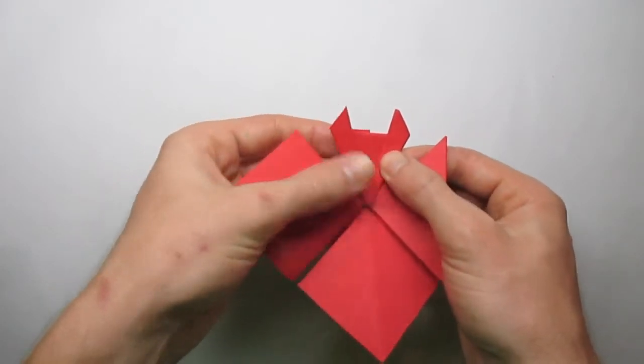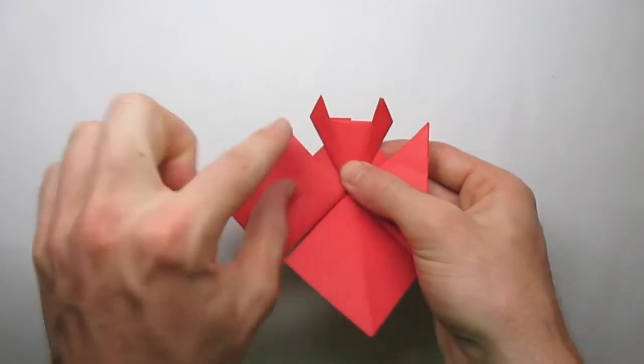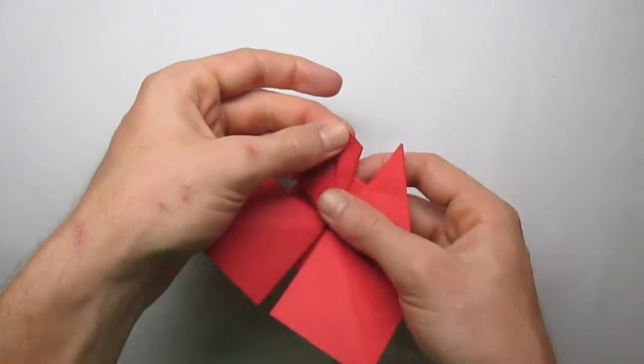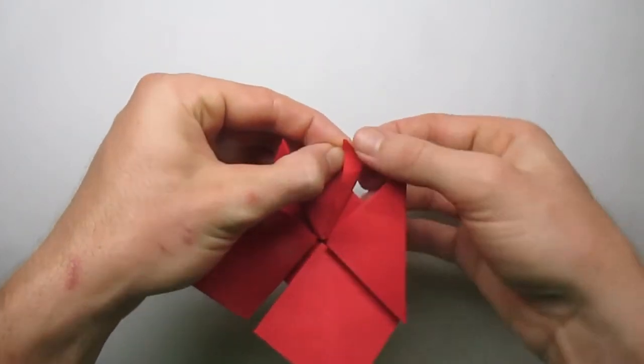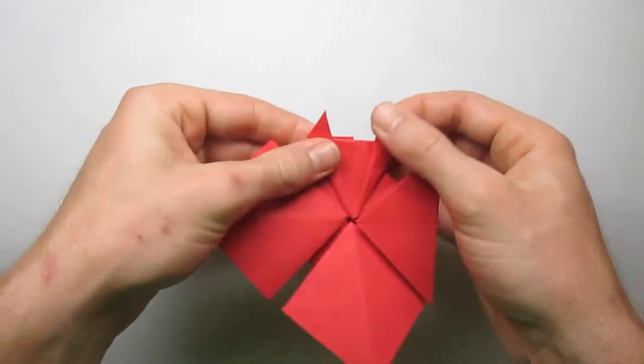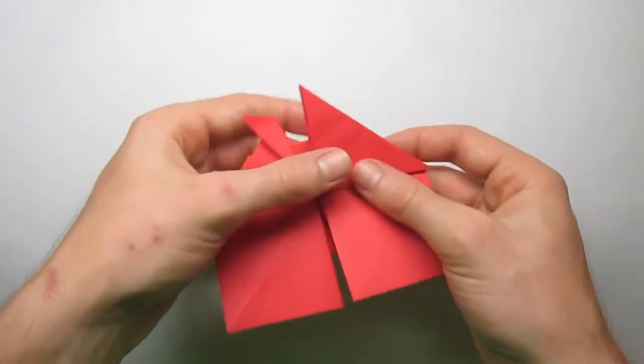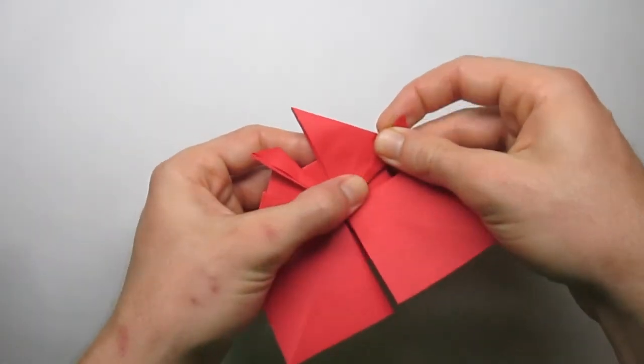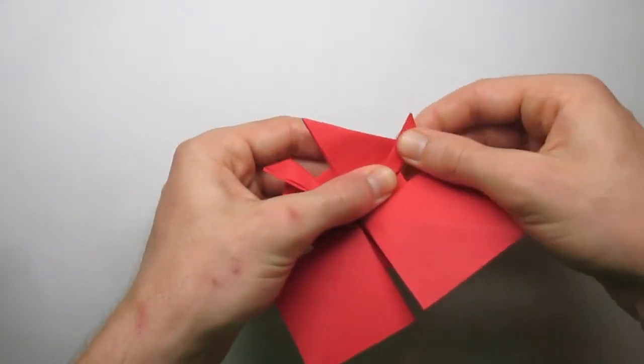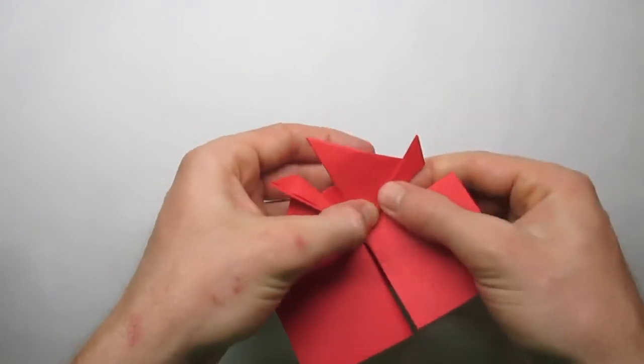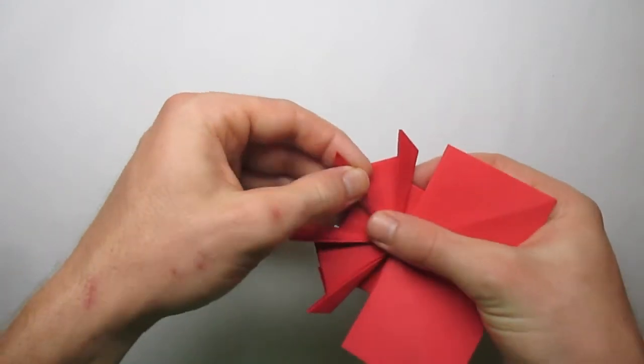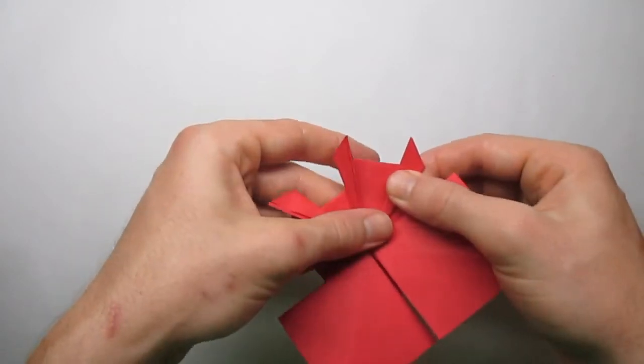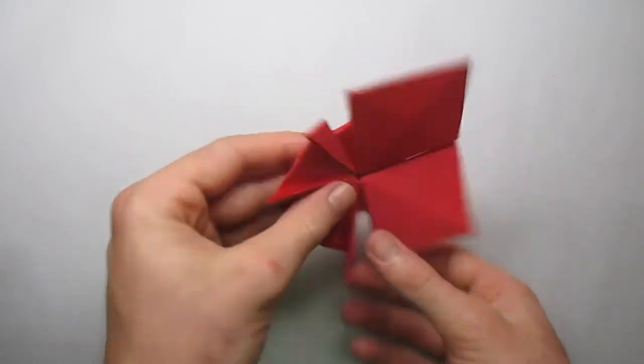Fold it over about that distance there. Same distance from the middle crease to the edge as the outside edge to the inside here. Do the same thing on this leg here.